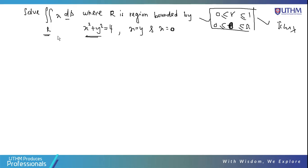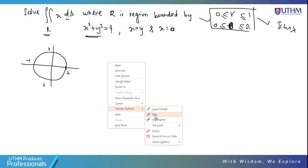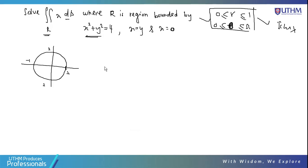From the sketch: x² + y² = 4 is a circle of radius 2. The line x = y passes through the origin with slope 1. The line x = 0 is the y-axis. The region R is bounded between these three curves in the first quadrant.